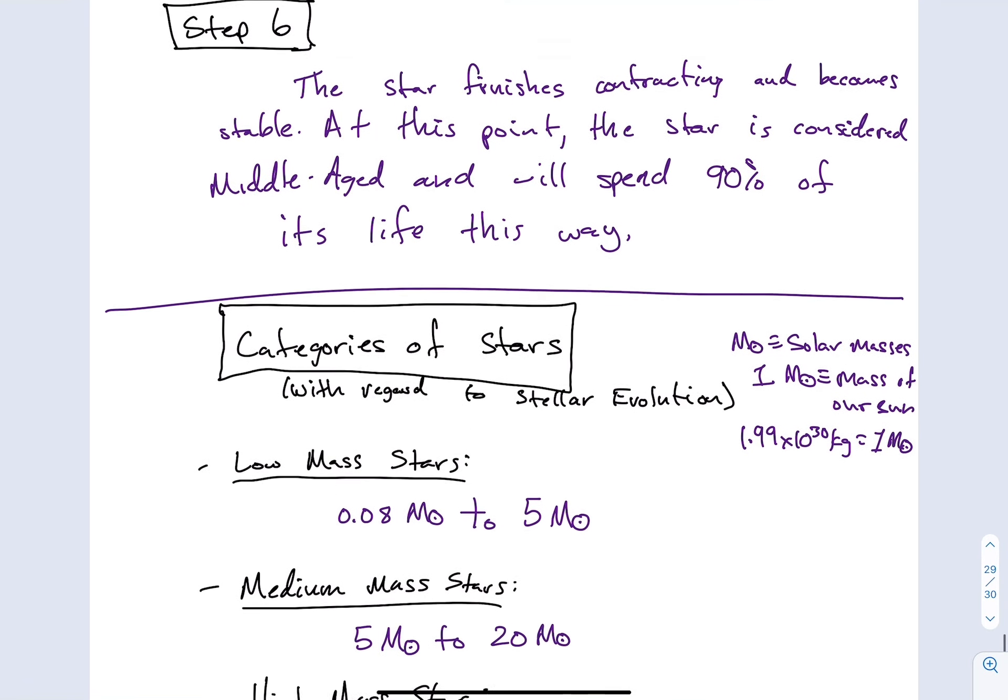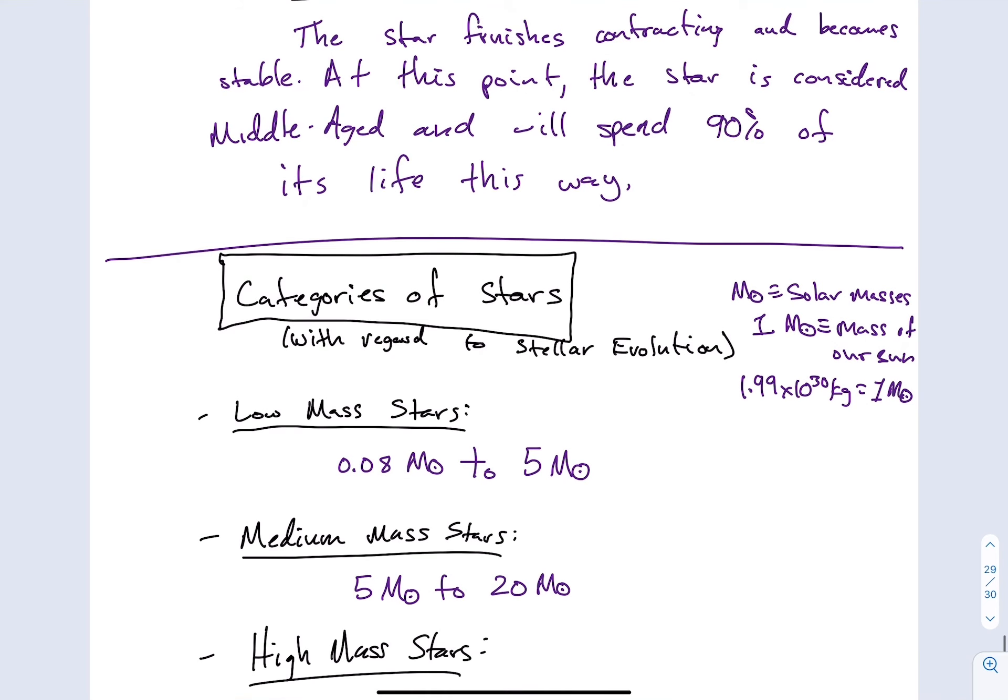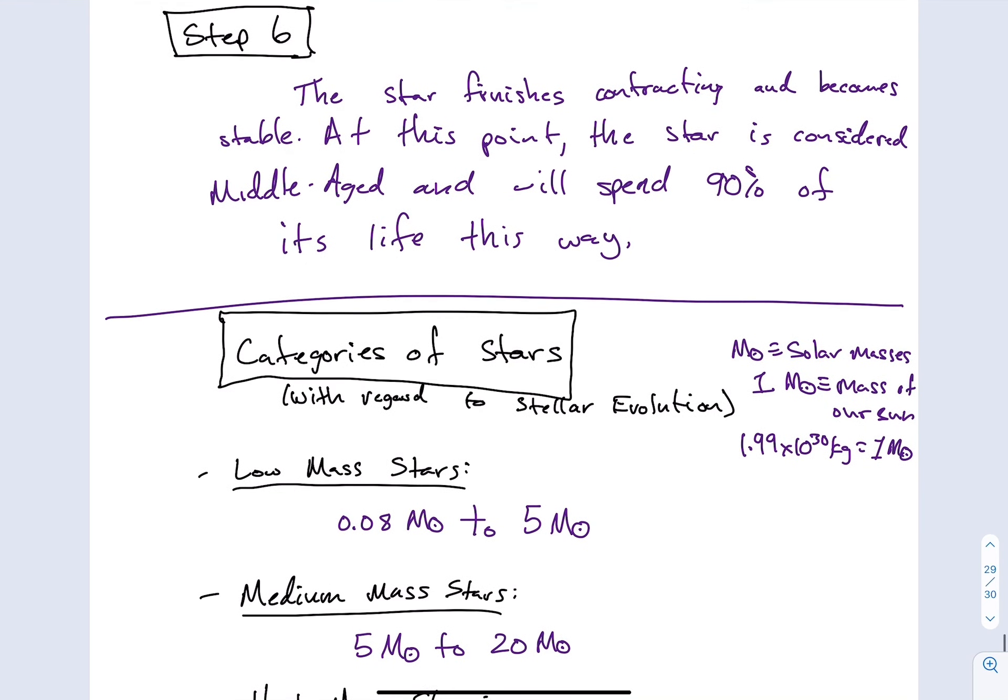So the last step in this little video is step six. Step six is all about the star finally coming to its own. So the star finishes contracting and becomes stable. At this point, the star is considered to be middle-aged, and it will spend 90% of its life this way. So it took approximately five percent of its total life to get here, and now it's going to spend 90% of its life looking exactly as it does.